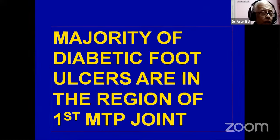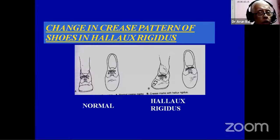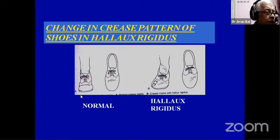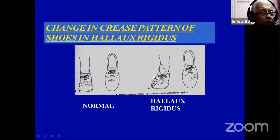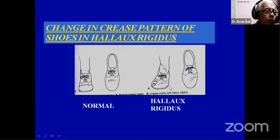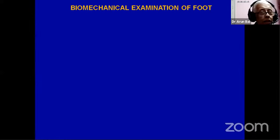That is why the majority of diabetic foot ulcers are in the region of the first MTP joint. If you observe the patient's closed shoes, you will normally see horizontal creases where all MTP joints move together. When one joint moves late, you see an oblique crease — so if you're observant, you know the patient has limited joint mobility of the first toe and is heading for an ulcer.